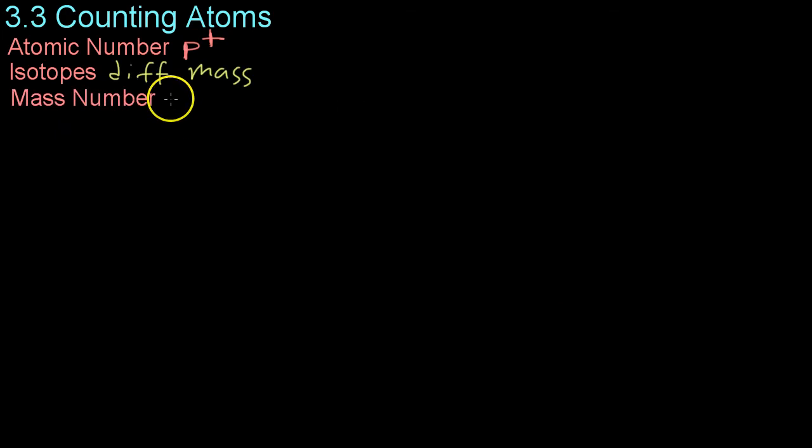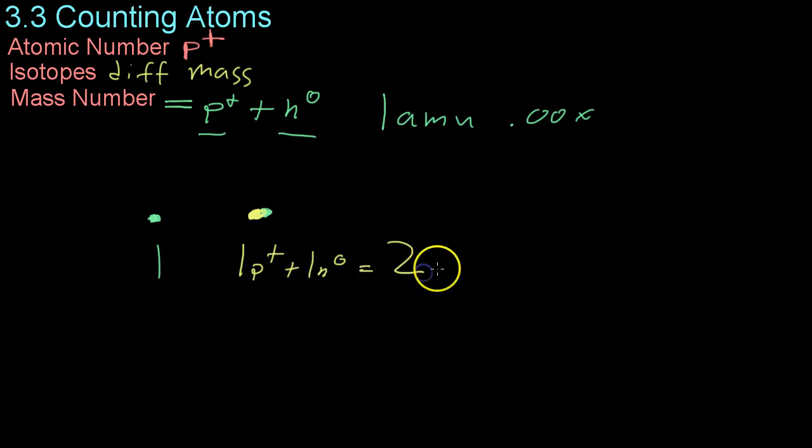The mass number of an isotope is simply the number of protons plus the number of neutrons, because for all intents and purposes, these weigh roughly the same - one atomic mass unit, with a little bit of decimal variation. For example, protium, which has just the one proton, would have a mass number of one. Whereas deuterium, which has the proton plus the extra neutron, would have one proton plus one neutron, giving it a mass number of two.